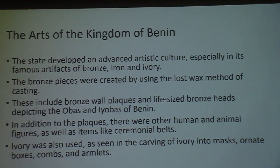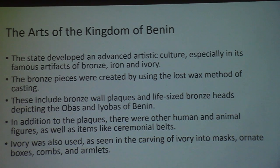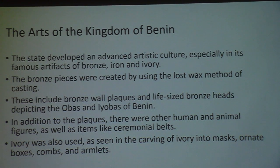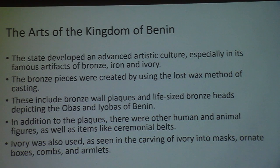The arts of the Kingdom of Benin reflect a really advanced artistic culture. A lot of Europeans thought that Africans could never have achieved something of this quality on their own — hypotheses ranged from space aliens to Egyptians to Portuguese — but the bottom line is they did this themselves. The artifacts are in bronze, ivory, and iron. The bronze pieces were created using the lost wax method of casting. There were bronze wall plaques, life-sized bronze heads depicting the Oba and the Iyoba — the queen mother — as well as other animal and human figures, ceremonial belts, and ivory carved into masks, boxes, combs, and amulets.